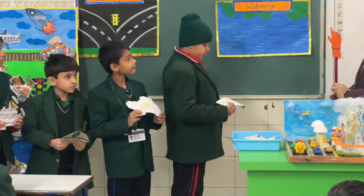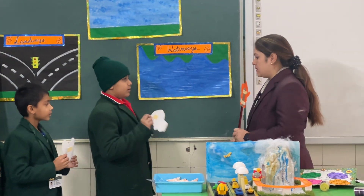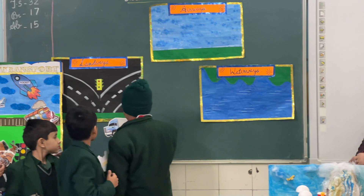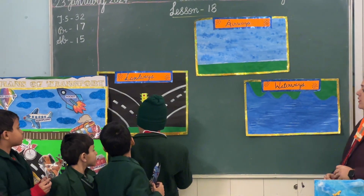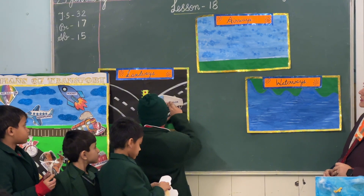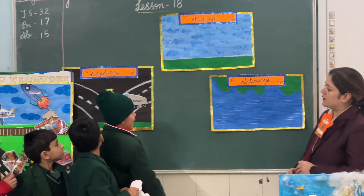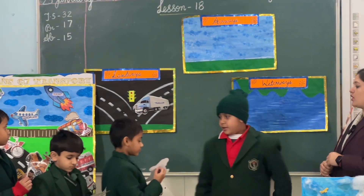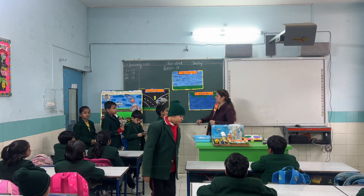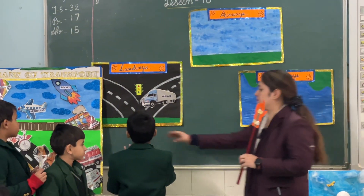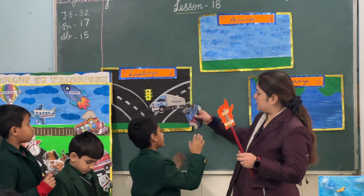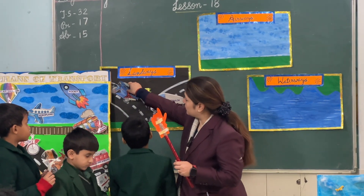What did you get? Show me the picture. Where are you going to paste it? Very good. Say loudly what you got. It's a land transport. Land transport. Yes. What did you get? It's a part of which transport? Land transport. Next.